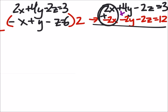So 4y plus 2y is 6y. Thank you. Then I'm going to add these two. So negative 4z. And I'll add the 3 and 12, which is 15.